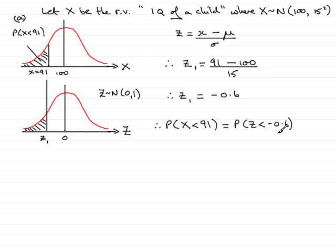Now when it comes to looking values up in the tables, your tables only work out the probability to the left of a z value, that is less than a z value, but providing the z value is on the right hand side of 0. So we're not going to have much luck looking this up at the moment.